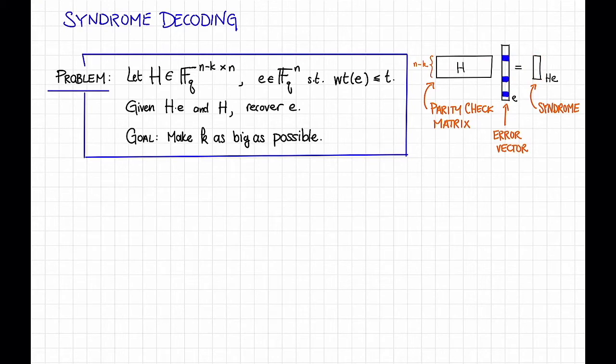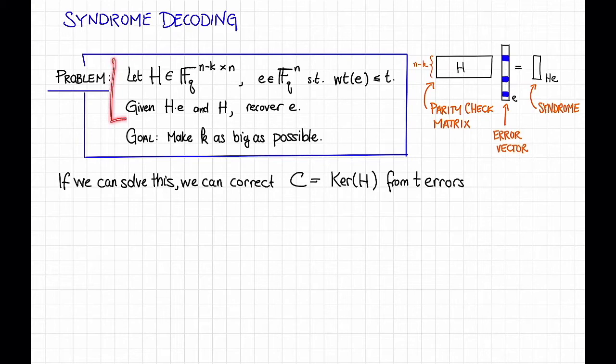So perhaps you already see the connection to decoding error correcting codes from errors, but let's spell it out. In particular, if we can solve this problem, then I claim we can correct C, the kernel of H, that is the code for which H is the parity check matrix, from T errors.